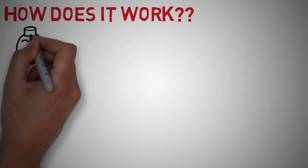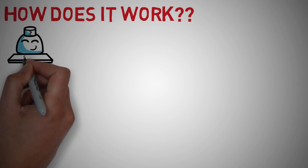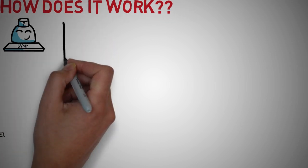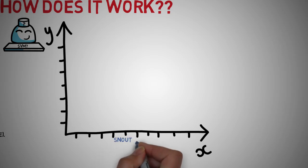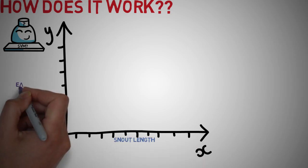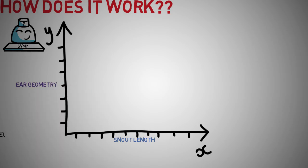To understand SVMs a bit better, let's first take a look at why they're called support vector machines. Say we got some sample data of features that classify whether an observed picture is a dog or cat. We can, for example, look at snout length or ear geometry if we assume that dogs generally have longer snouts and cats have much more pointier ear shapes.